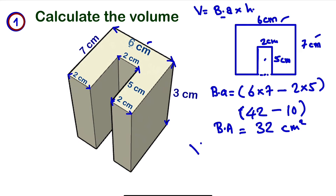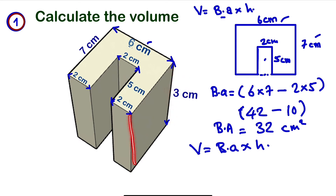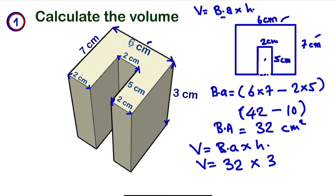We can now move further to calculate the volume. Volume is base area times the height. The height of this prism is 3 centimeters — we can see 3 centimeters on each side. So the volume will be equal to 32 centimeters times 3, which gives us a volume of 96 centimeter cube.